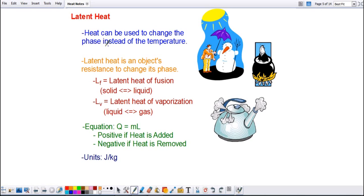This happens when the object is going through a phase change. So heat can be used to change the phase instead of the temperature. When this is happening, we call this latent heat. So latent heat is an object's resistance to change its phase.